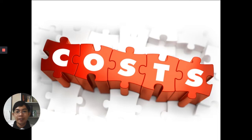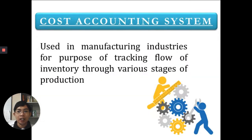For today's video we'll be discussing the different product costing systems. A cost accounting system is used in manufacturing industries for the purpose of tracking the flow of inventory through various stages of production. We will be discussing how products accumulate costs. Basically, there are two costing systems we will tackle: job order costing and process costing.